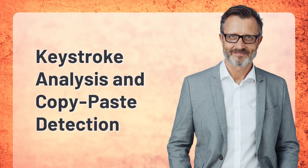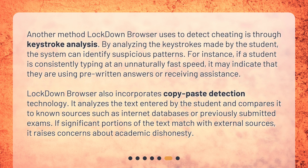Keystroke Analysis and Copy-Paste Detection. Another method Lockdown Browser uses to detect cheating is through keystroke analysis. By analyzing the keystrokes made by the student, the system can identify suspicious patterns. For instance, if a student is consistently typing at an unnaturally fast speed, it may indicate that they are using pre-written answers or receiving assistance.